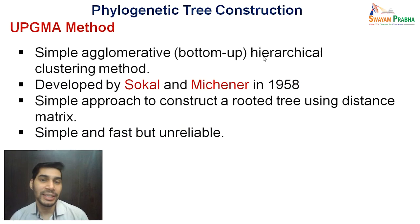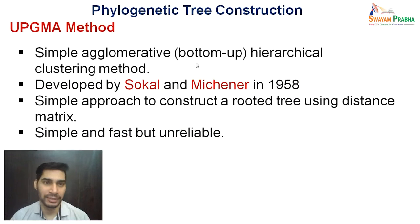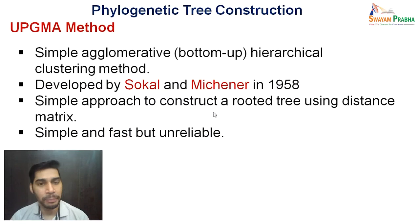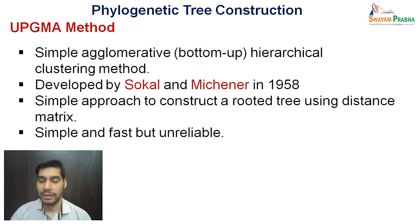Now let us see how we construct phylogenetic trees using the UPGMA method. It is a simple agglomerative hierarchical clustering method — agglomerative means bottom to up. It was developed by Sokal and Michener in 1958. It is a simple approach to construct a rooted tree using a distance matrix. Though it is simple and very fast, it is not that reliable.